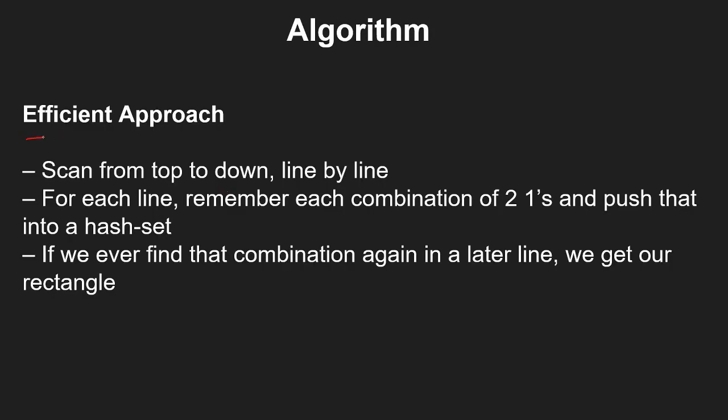Let's look at an efficient algorithm to solve this problem. What we do here basically is to look for two ones in a line and store this in a hash set. If we find two more ones again in a line, we get the required rectangle.